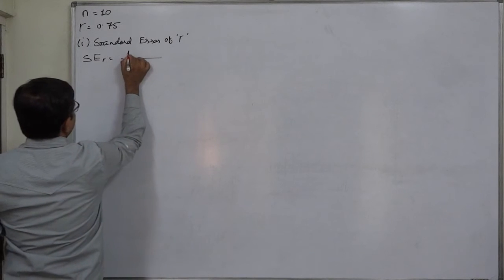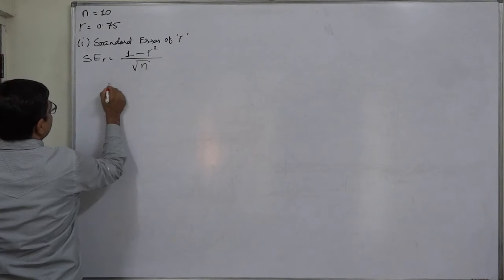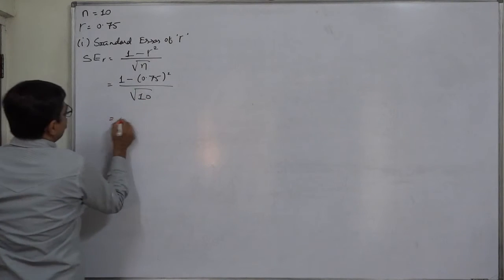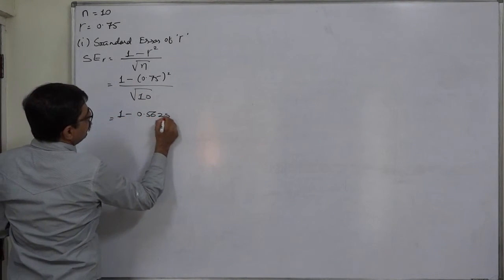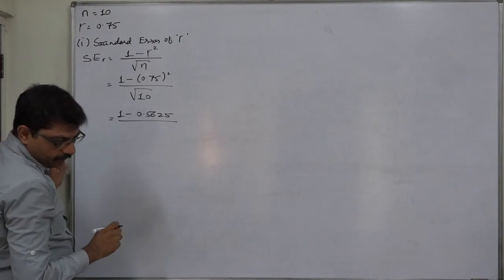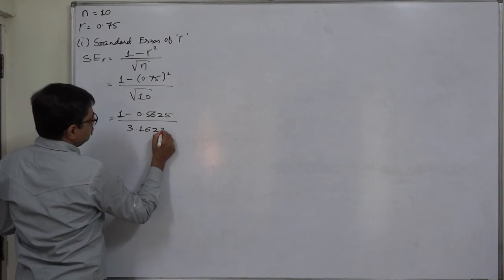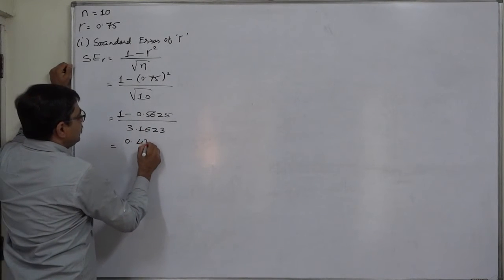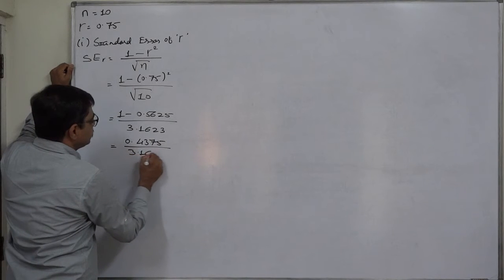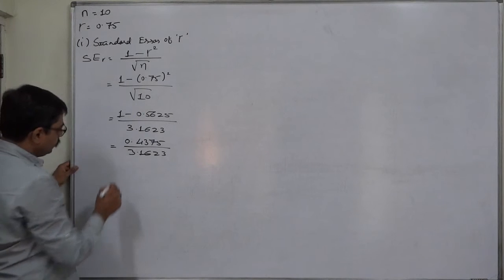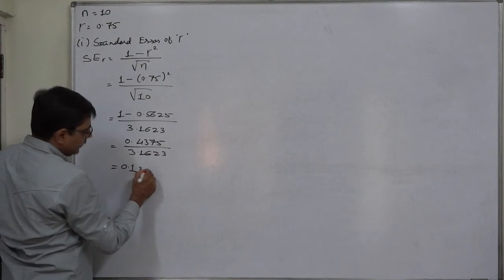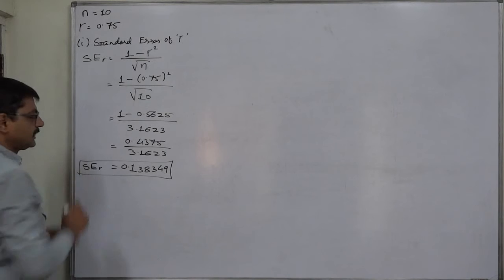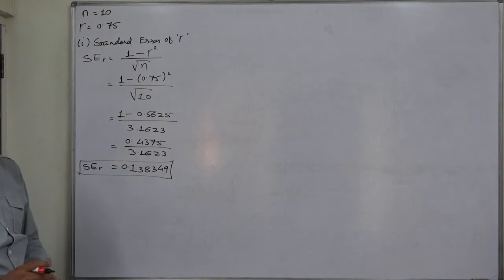The formula of standard error is: 1 minus the coefficient squared, upon square root of n. So that is 1 minus 0.75 squared, divided by square root of 10. That gives us 1 minus 0.5625 upon 3.1623, which means ultimately it is 0.4375 divided by 3.1623, and it comes to 0.138349.